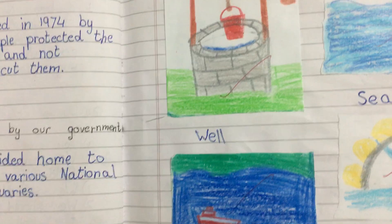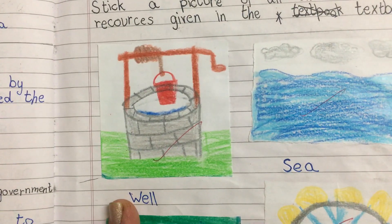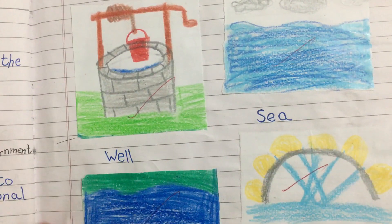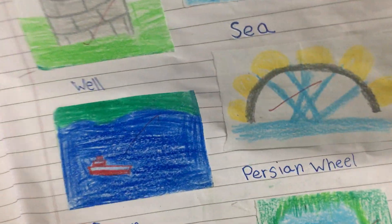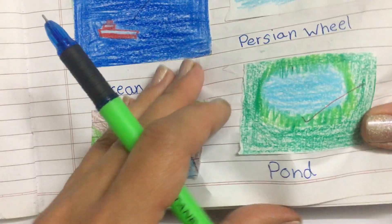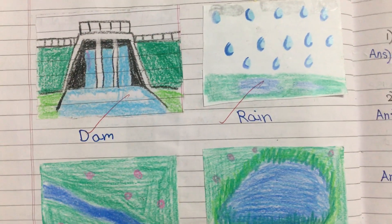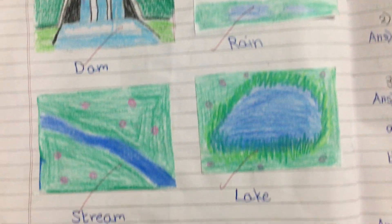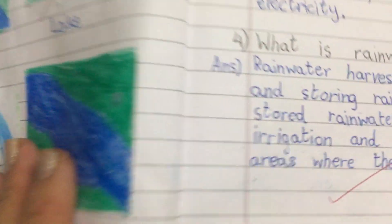As you can see here, these are some sources of water: well, sea, freshwater, ocean, canal, pond, dam, rain, stream, lake, and river.